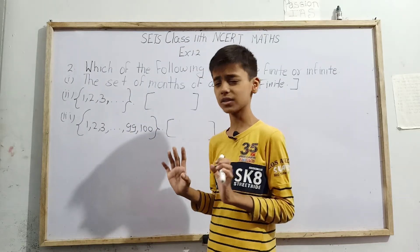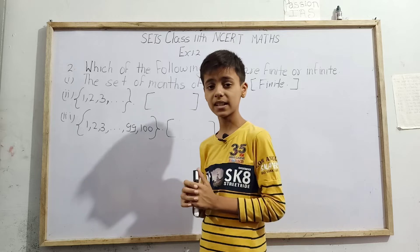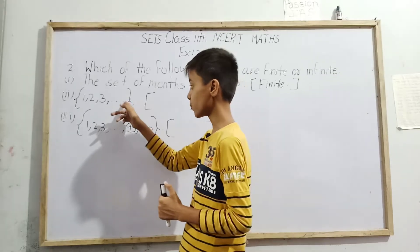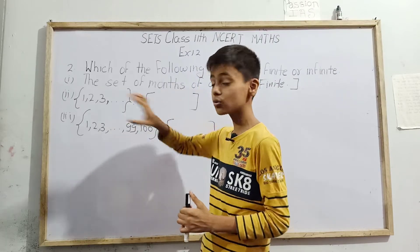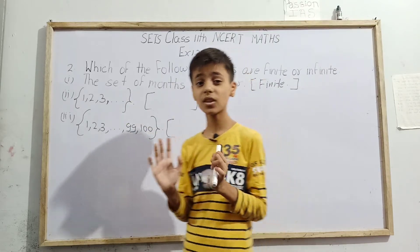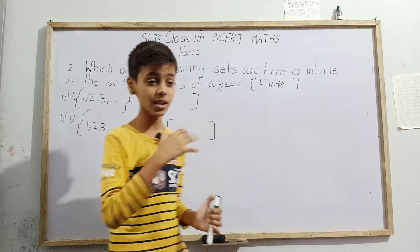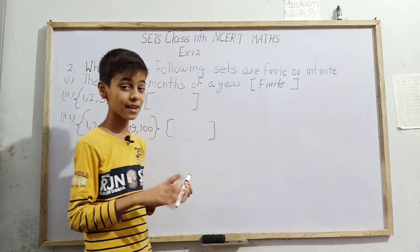Those dots are explaining to us: after that, is there any endpoint? After the dots, is any other element given? No. It means this set has no endpoint. And if it does not have any endpoint, it means it goes up to unlimited, up to infinity, and we cannot count them.